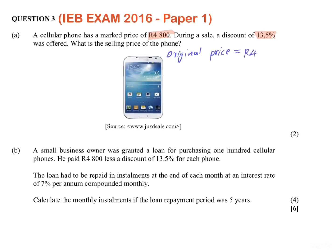We start by noting that the original price is equal to 4800. The discounted amount is 13.5% of 4800, which is 4800 times 13.5%. When we calculate it, we get 648. So 648 is the discounted amount of the phone.